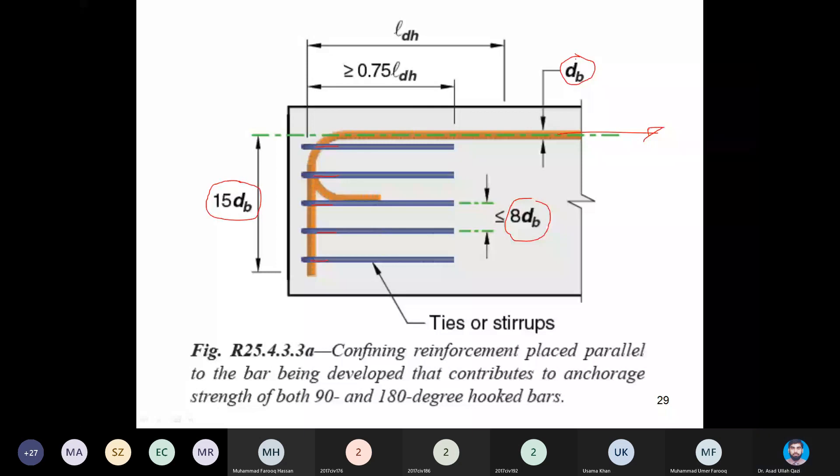It is the diameter of the hook, and up to 75 percent of the hook length of the bar they are spanning. The ties are having the span not less than 75 percent of the LDH. The confining reinforcement placed parallel to the bar - because they are parallel to the bar being developed - that contributes to anchorage strength of both 90 and 180 degree hooked bars. In this same picture they are also explaining not only the 90 degree but also the 180 degree hooked bars.